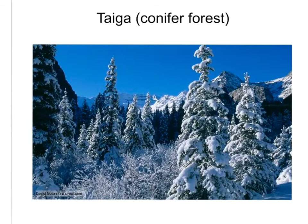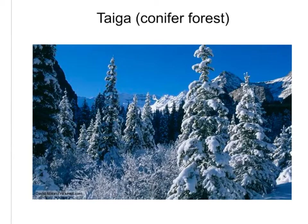The taiga, or conifer forest, is very familiar to all of us because that's where we live. This biome is characterized by very harsh winters and short, cool summers. Snow is the major form of precipitation, which is not available to plants until the spring thaw. This biome is dominated by coniferous trees, but there are a variety of deciduous trees as well — aspen, willow, and alder. The organisms in this biome are usually well adapted for the cold.